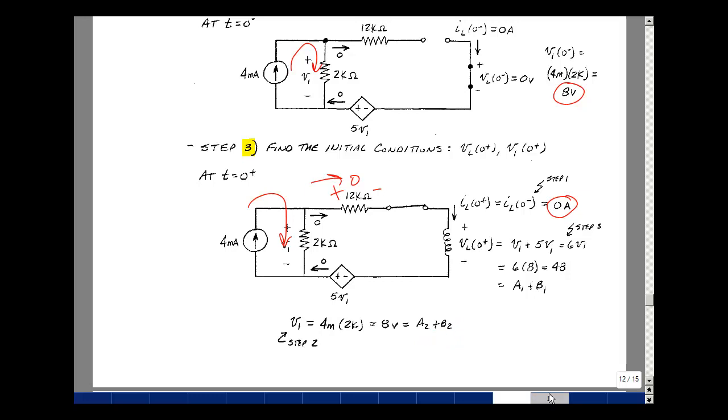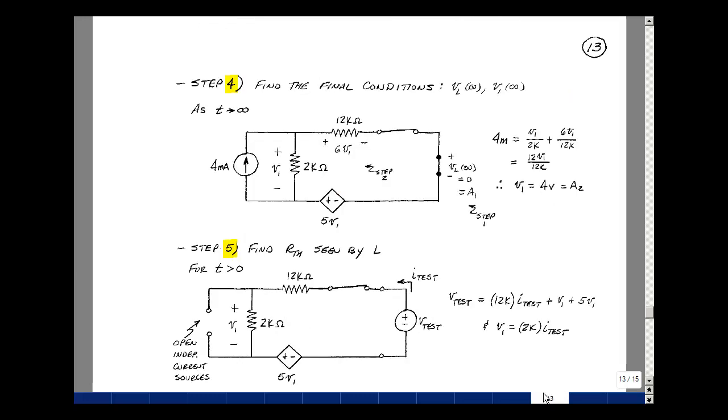The fourth step is then to find the value of our variables as t approaches infinity. And again, it's just five time constants. So again, the switch is closed. Now the inductor again returns to being a short circuit. So the voltage across it is zero, and that's going to be equal to a1 plus b1 times e to the minus infinity over tau, just a1. Now with the short circuit here, and I have v1 here and 5v1 here, that forces 6v1 across the 12k resistor.